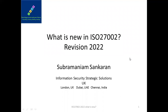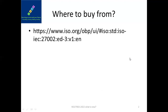We have the latest ISO 27002, the guideline for implementing ISO 27001. This particular revision is from February 2022. Let's take a look at what has been changed as part of the guidance. ISO 27001 is not expected to undergo any change because ISO 27002 addresses the statement of applicability — the Annex A part of ISO 27001. This is Subramanyam Shankaran from Information Security Strategic Solutions from the UK. You can download this guidance document from iso.org — I will share the link in the video description.